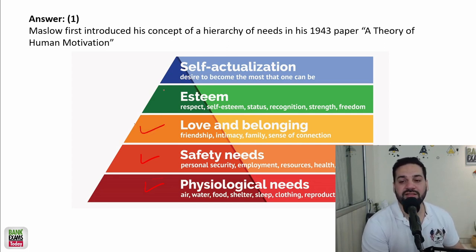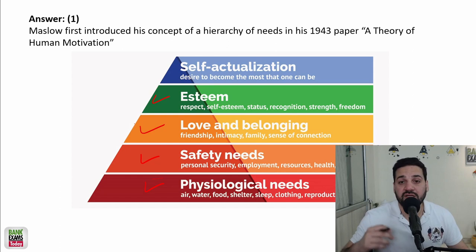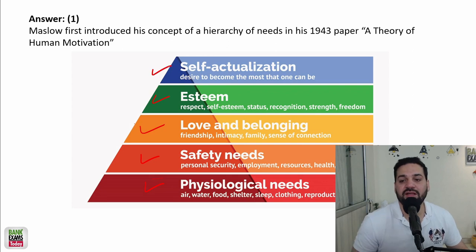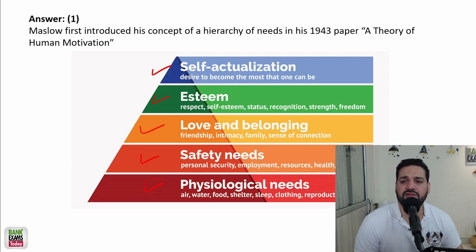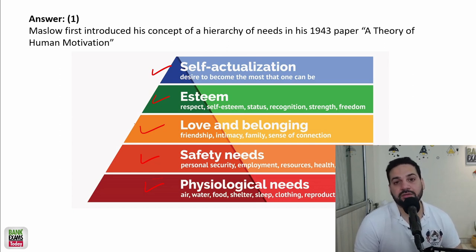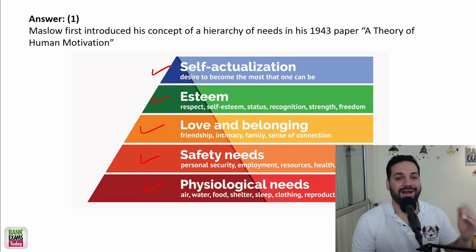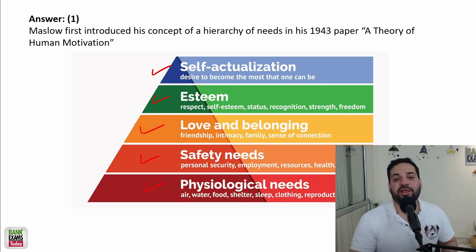Once love and belongingness needs are satisfied, then you need respect from your family, society, and people around you — those are esteem needs. Once esteem needs are satisfied, there are self-actualization needs: the desire to become the most that one can be. For example, you always wanted to become a musician but became a banker; after ten years you leave your job to become an actor — that is self-actualization.